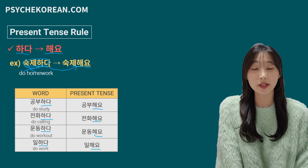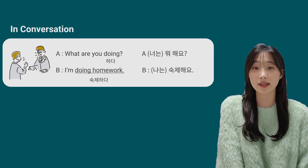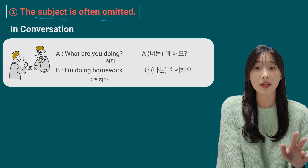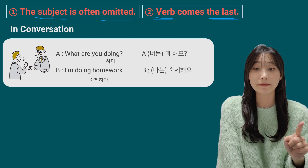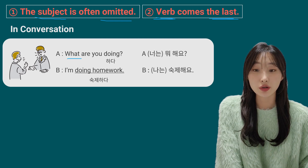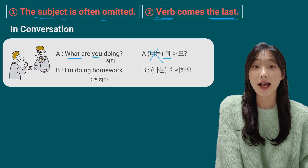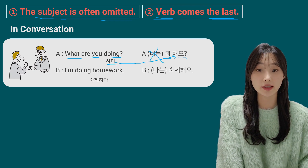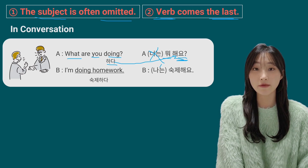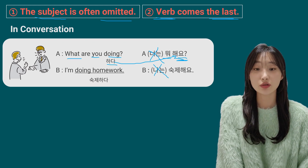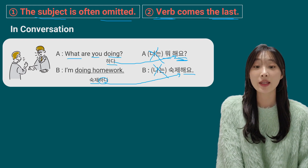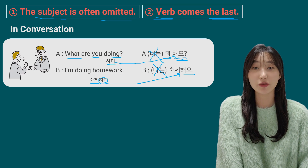Now let's practice making the present tense with conversation. To translate a sentence into Korean, remember two things: first, the subject is often omitted; second, the verb always comes last. For example: 'What are you doing?' — 뭐 (what), subject omitted, 하다 (doing) → present tense 해요: so 뭐 해요? Answer: 'I'm doing homework' — subject omitted, 숙제하다 → 숙제해요. Let's repeat: 뭐 해요? / 숙제해요.